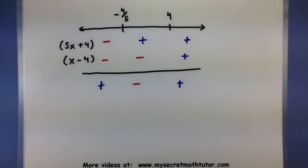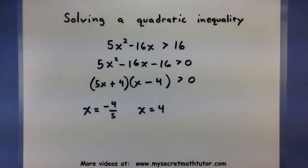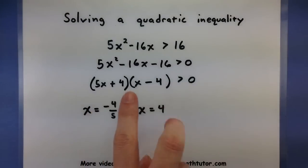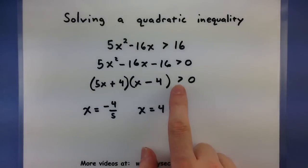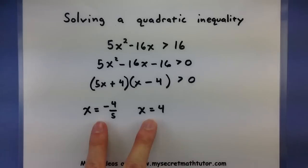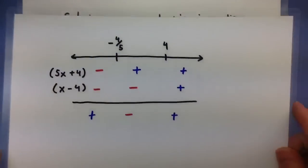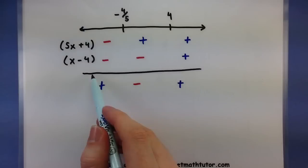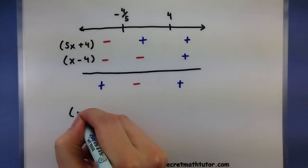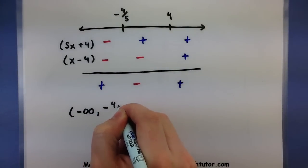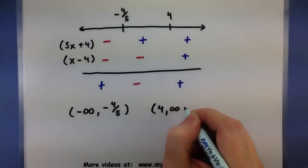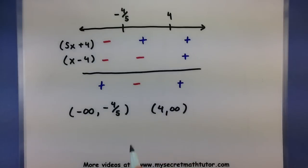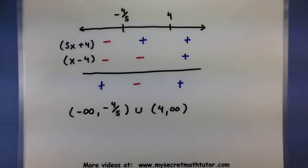Which intervals will we end up taking? It depends on our original quadratic. We want to know where it is greater than zero, so we'll take the positive intervals. Since the inequality is strictly greater than zero, we will not include either of the endpoints. We take the interval from negative infinity up to negative 4/5 (not including it), and from 4 up to infinity (not including 4). Since we have two intervals, we connect them with the union symbol — these two intervals represent the solution to the inequality.